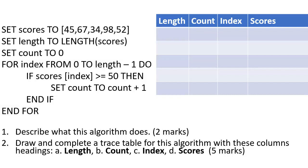So what I'm going to do now is trace this algorithm through. Let's start by putting in the values for scores there, and that is the array there with the five elements: 45, 67, 34, 98, and 52. So I've added those to scores there. Now set length to length scores, so I can see that there are five elements in the array, so length is set to five. Set count to zero.